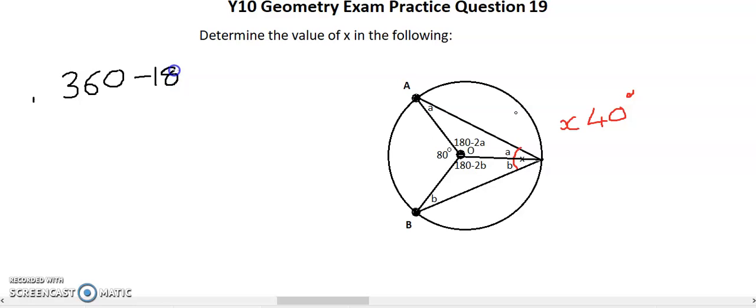So I'm just going to take away 180 minus 2A, and I'm going to take away 180 minus 2B.